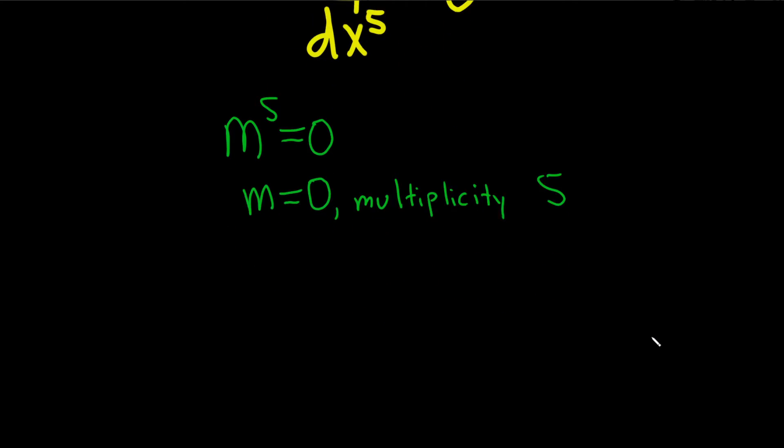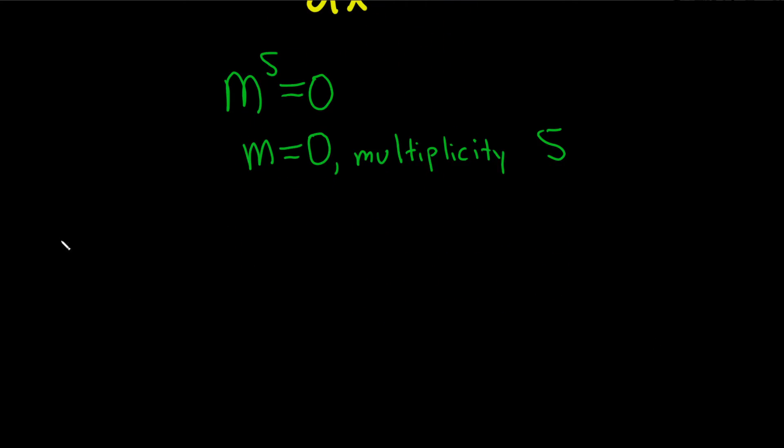Now let's carefully write down the answer. So the answer here is going to be y equals c1 e to the zero x. So if it was just multiplicity one, that would be the answer.